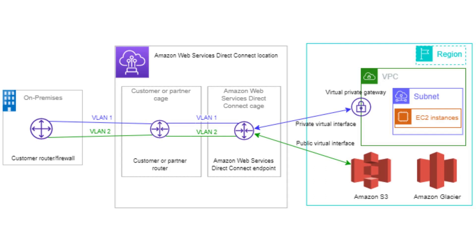In this diagram, we can see there is a customer data center on the left side. The customer data center is connected to a router that is capable of establishing a Direct Connect connection with AWS. The Direct Connect connection is established through a private connection that bypasses the public internet, using a dedicated physical connection provided by AWS Direct Connect.